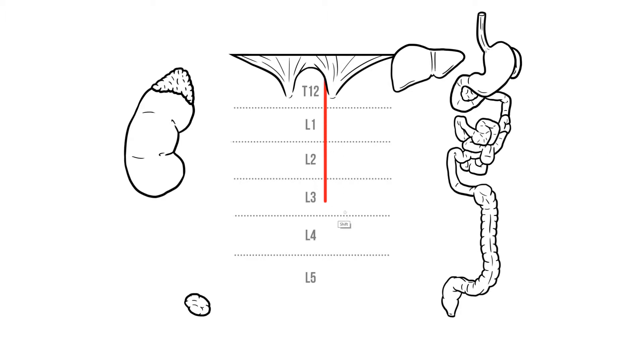The abdominal aorta starts by passing through the diaphragm at T12, travelling through an opening known as the aortic hiatus. It then travels down the abdominal wall until it reaches L4, at which point it divides into left and right common iliac arteries.